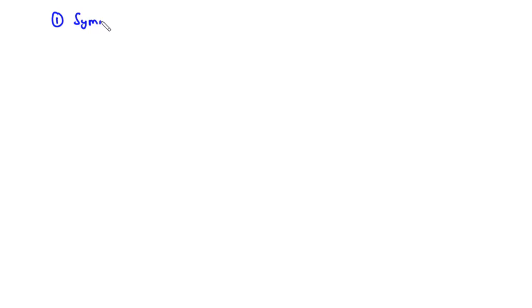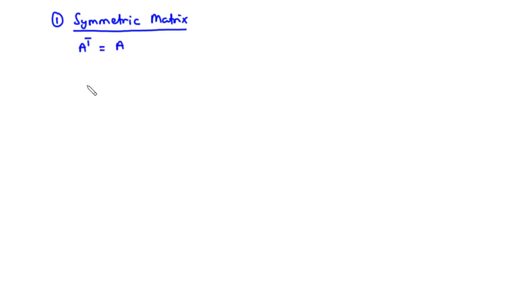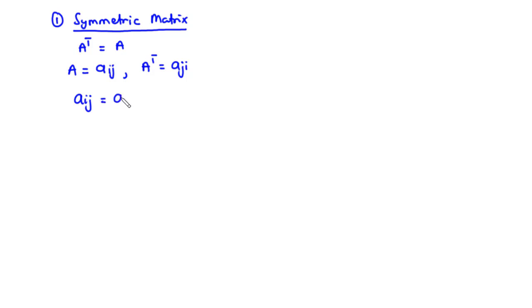To begin today's lesson, let's start off with a symmetric matrix. A square matrix A is said to be symmetric if the transpose of matrix A is equal to matrix A itself. Given that matrix A is equal to Aij and the transpose of matrix A is given as Aji, if matrix A is symmetric, then Aij is equal to Aji for all possible values of i and j.